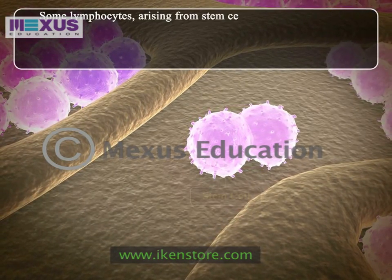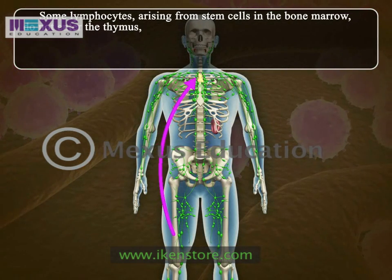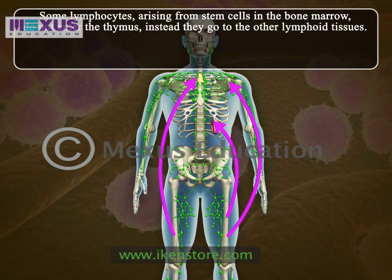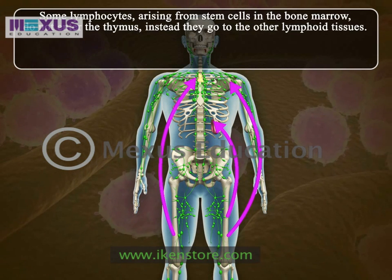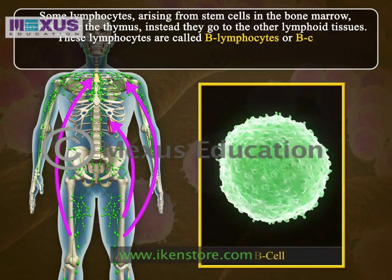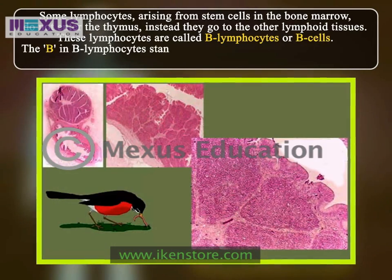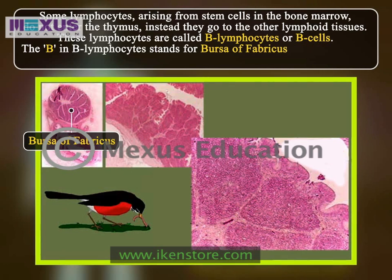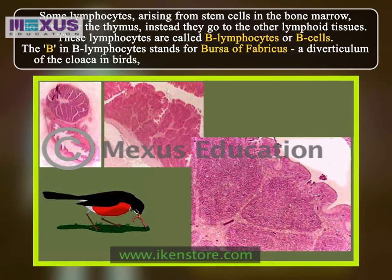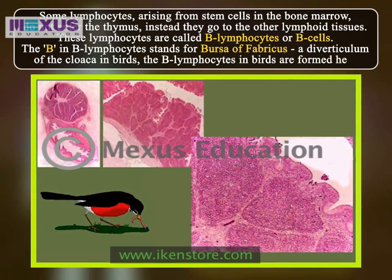Lymphocytes arising from stem cells in the bone marrow that do not enter the thymus instead go to other lymphoid tissues. These lymphocytes are called B lymphocytes or B cells. The B in B lymphocytes stands for bursa of Fabricius, a diverticulum of the cloaca in birds, where B lymphocytes in birds are formed.